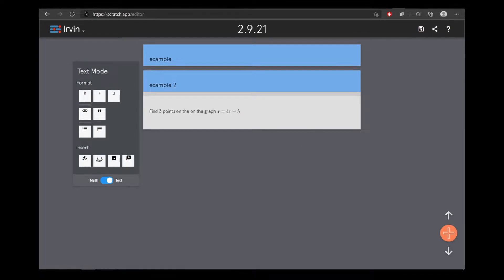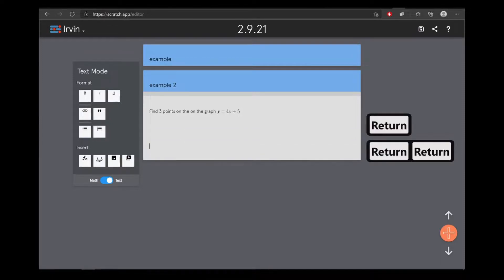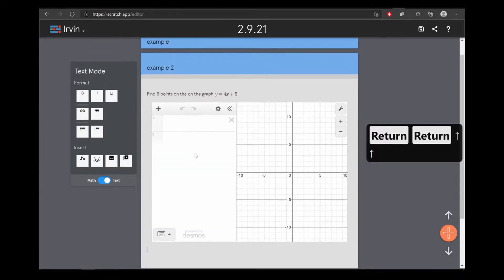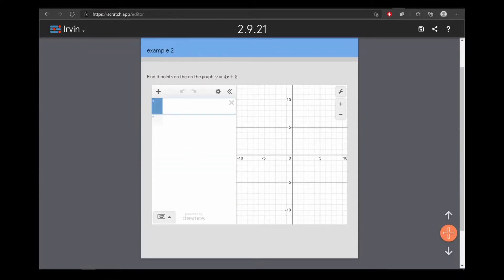Okay, so let's work on this problem. We're going to find three points on the graph y equals 4x plus 3, and we can put some space there. Let us make the table or graph. Now we have y equals 4x plus 5.